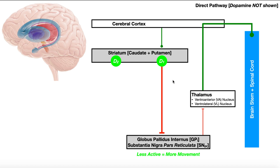The thing about the basal nuclei is if you want to get a movement, the thalamus has to be activated. And it's two specific nuclei in the thalamus — the ventral anterior or VA nucleus and the ventral lateral VL nucleus — that have to be activated. Now this cluster of cells right here is composed of the globus pallidus internus and a region of the substantia nigra called the substantia nigra pars reticulata, or PR. These are inhibitory, and if these neurons were activated, they would inhibit the thalamus and inhibit movement.